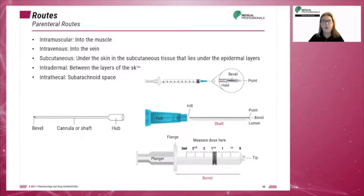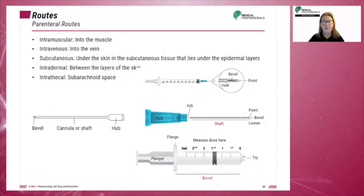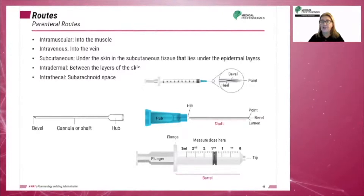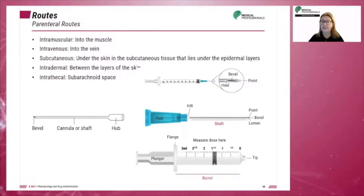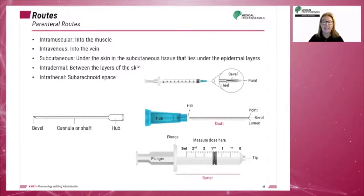To avoid damage to the spinal cord, the injection is given below the second lumbar vertebrae. Parenteral drugs have a rapid onset of action because they are absorbed directly into the bloodstream. They require the use of a needle, a syringe, and a container.